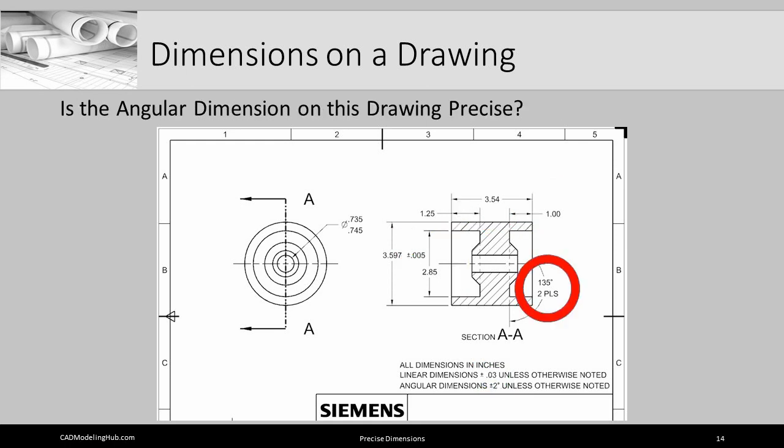What about the angular dimension? It shows here as 135 degrees. Is that dimension precise? Well, again, we have to look at the tolerance band to find out how precise of a dimension that 135 degrees is. And in this case, it's plus or minus two degrees, which when you think about it, two degrees in this case, a total of four degrees, is probably not very precise. But for an angle, it's not too bad. So this angle could be made as small as 133 degrees or as large as 137 degrees.